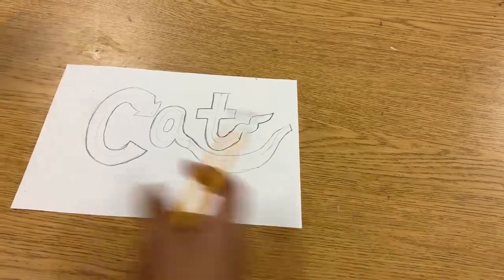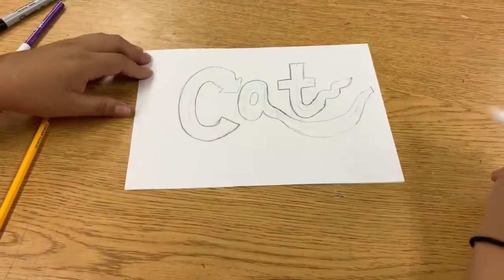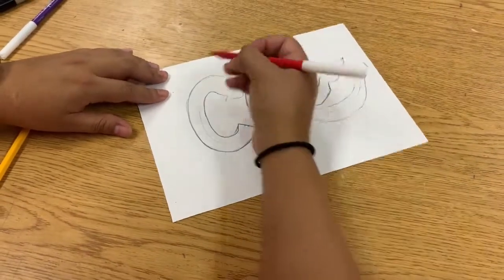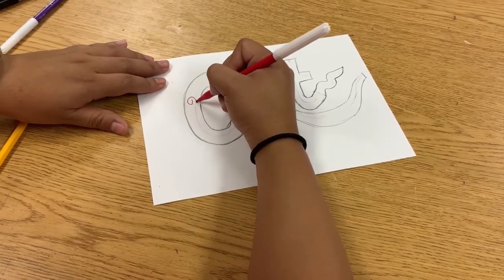Once you have your name where you want it to be, you can start to color it. You can add polka dots, stripes, zigzags, whatever you'd like on the inside of your letters. So from here, I could do some swirls.